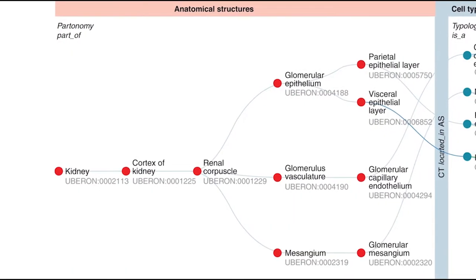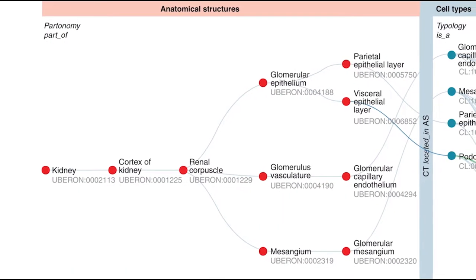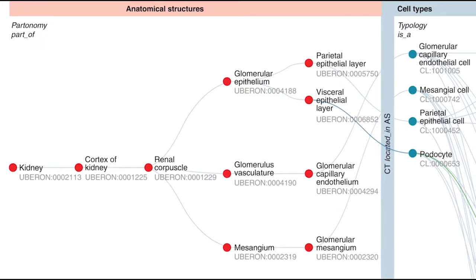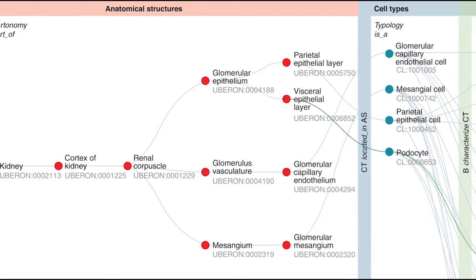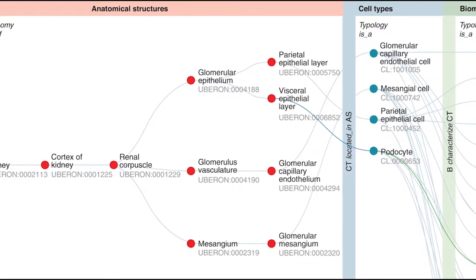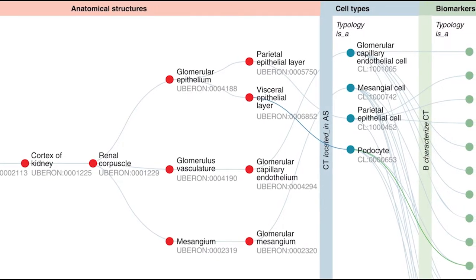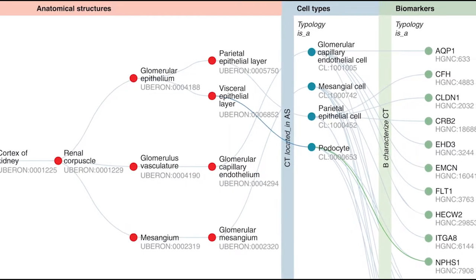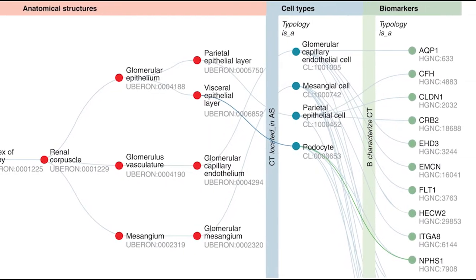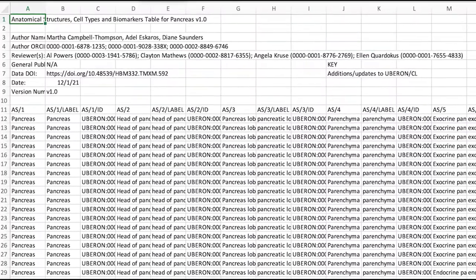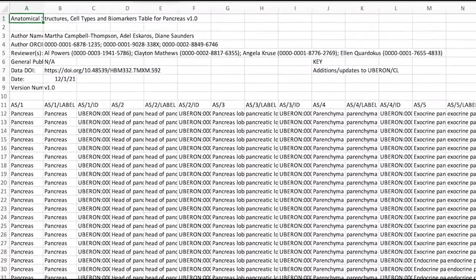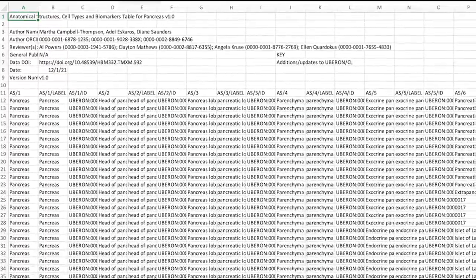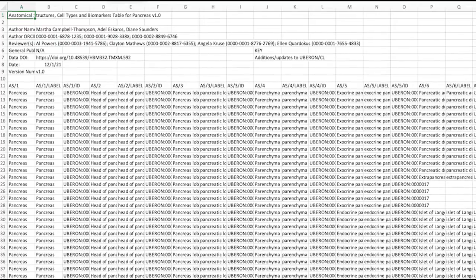The WHAT information is captured by the CCF HRA biological structure ontology. While organs differ substantially in their form and function and across human specimens, all have anatomical structures, cell types, and biomarkers that are captured in the ASCT+B tables and the associated 3D reference object library. The resulting ASCT+B tables represent expert knowledge and information from textbooks, scholarly publications, and experimental data evidence.